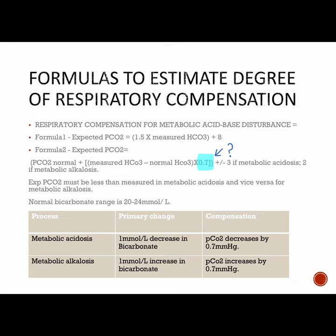You may wonder why there is a decimal 0.7 in the second formula. In metabolic acidosis, for every 1 mmol/L decrease in bicarbonate, pCO2 will decrease by 0.7 mmHg — the compensatory response being respiratory alkalosis, so decreasing pCO2 causes alkalosis. Similarly, in metabolic alkalosis, for every 1 mmol/L increase in bicarbonate, pCO2 will increase by 0.7 mmHg to create respiratory acidosis, which is the compensation for metabolic alkalosis.